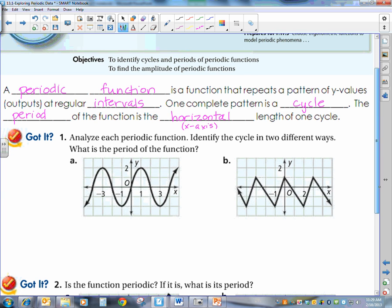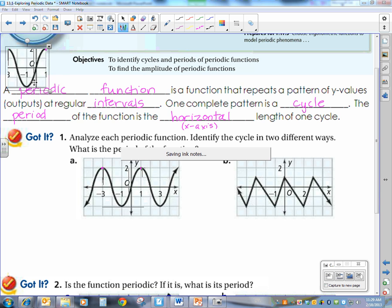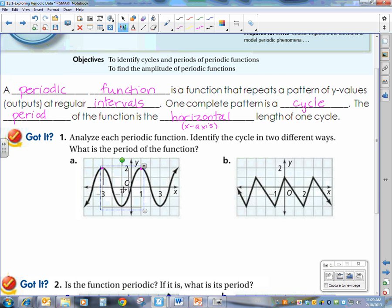So to start off with, they want us to analyze each periodic function, identify the cycle in two different ways, and what is the period of the function. I find it easiest to find a maximum value and then find the next maximum value. What you want to think to yourself when you're looking to determine the period is if you were to cut off a piece or copy a section of the graph between those two values that you marked. You can see if I put it right back, that's where it was.